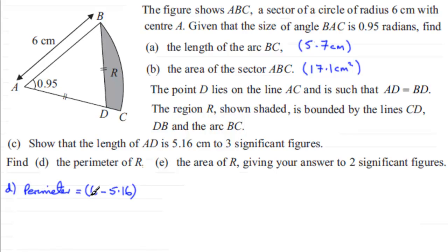And then we need to add that length BD, but that's the same as the length AD, 5.16. So we put plus 5.16 cm. And we've finally got the arc length BC which is 5.7 cm. And you can see that minus 5.16 plus 5.16, well they cancel one another out to give 0. So it's just a question of 6 plus 5.7 and that's going to equal 11.7, 11.7 cm then.